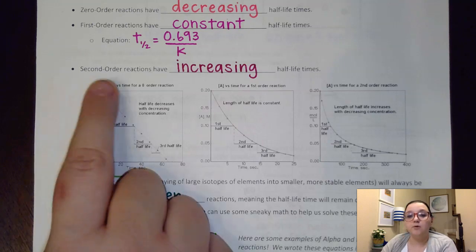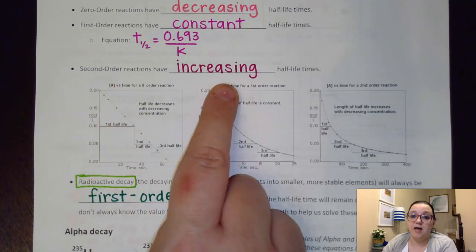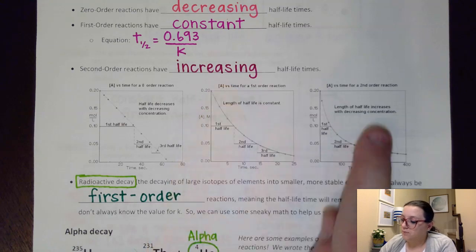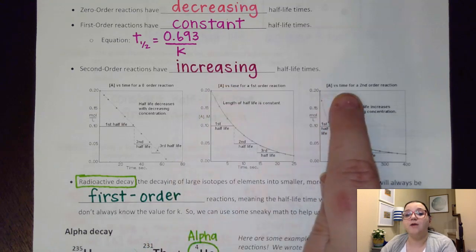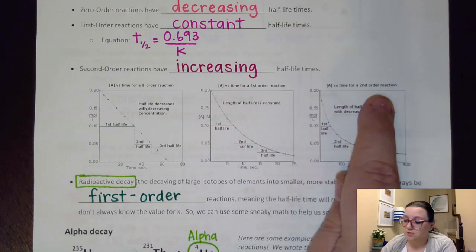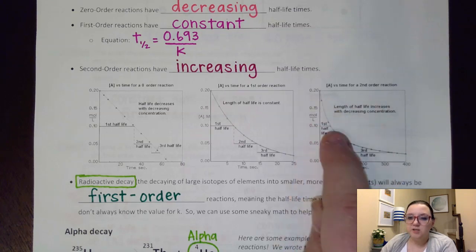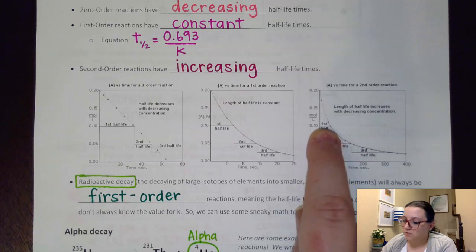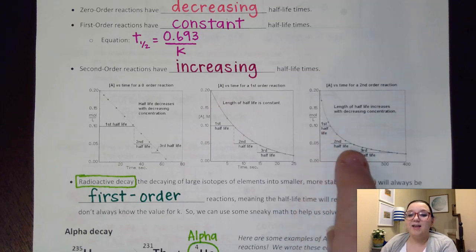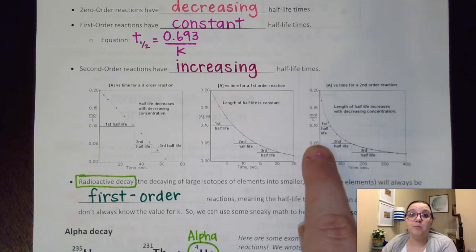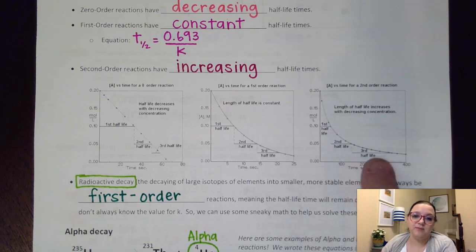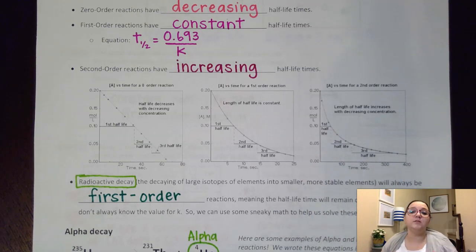Finally, on a second-order reaction, they have increasing half-life times. So if I look at my concentration versus time graph for a second-order reaction, what we'll notice is the first halving from 0.2 down to 0.1 is really short. But then as I go from 0.1 down to 0.05, that got a little bit longer. And as I would go from 0.05 to, say, 0.025, halving that again, that half-life time gets even longer.